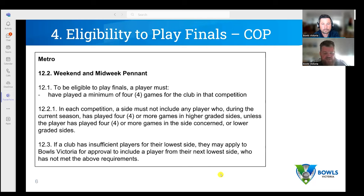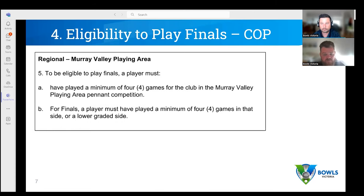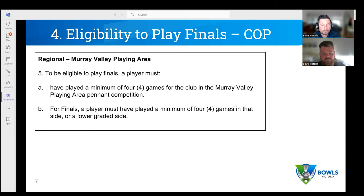The Murray Mallee example shows a simpler version: to be eligible to play finals, a player must have played a minimum of four games for the club in the Murray Valley playing area competition. For finals, they must have played a minimum of four games in that side or a lower graded side. That clause — 'or lower graded side' — is one we want to focus on, because there's a way to work out exactly how many games qualify.